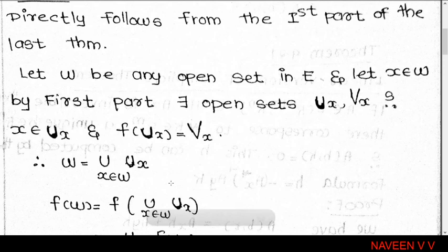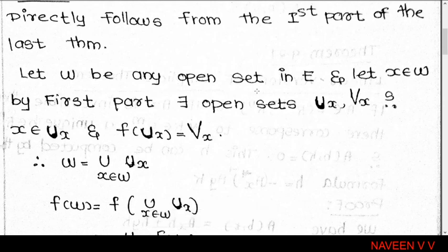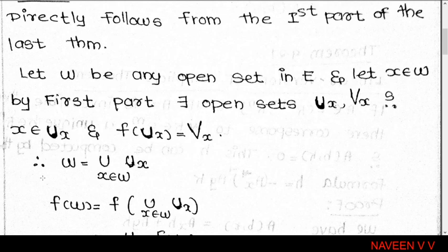For every x in W, since f'(x) is invertible as a linear transformation, by the Inverse Function Theorem there exists an open subset Uₓ such that x belongs to Uₓ and f(Uₓ) equals Vₓ. Then taking the union over all x belonging to W gives us the corresponding open sets Uₓ.